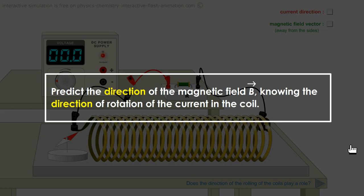We are going to talk about the direction of the magnetic field. You will learn to predict the direction of the magnetic field by knowing the direction of rotation of the current in the coil. Here is the coil.